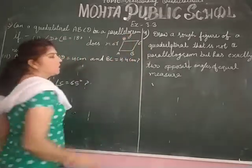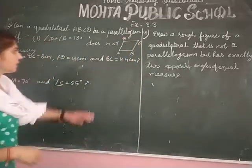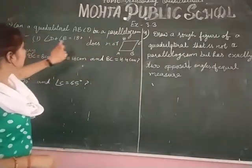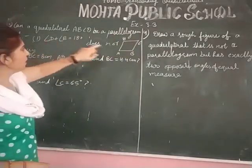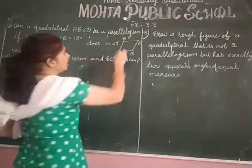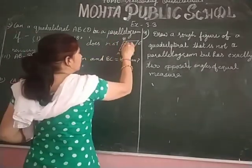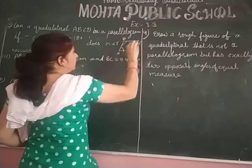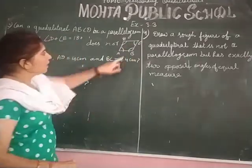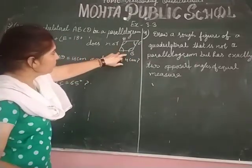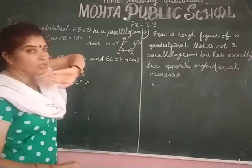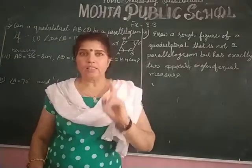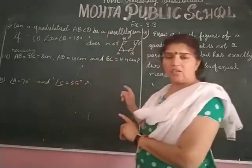First we draw a rough sketch of ABCD. Angle B and angle D sum to 180 degrees, and then angle A is equal to angle C. If B plus D equals 180 degrees, then it is a parallelogram.